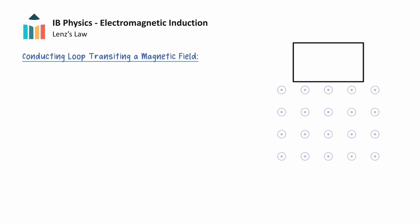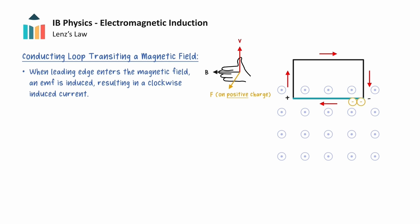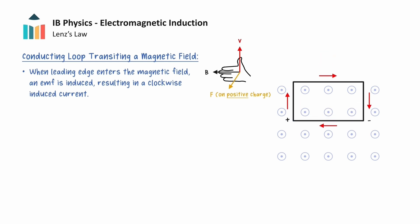Now let's expand this idea of a moving rod to a moving rectangular loop of conducting wire. Suppose that this loop is moving downwards into a uniform external magnetic field that points out of the screen. When the leading edge of the loop enters the magnetic field, forces will act on the free electrons in the leading edge. Using the right-hand slap rule, electrons will be pushed to the right-hand side, making the left-hand side of the leading edge positively charged. This induces an EMF in the loop, and results in a clockwise induced conventional current while the loop moves into the magnetic field.